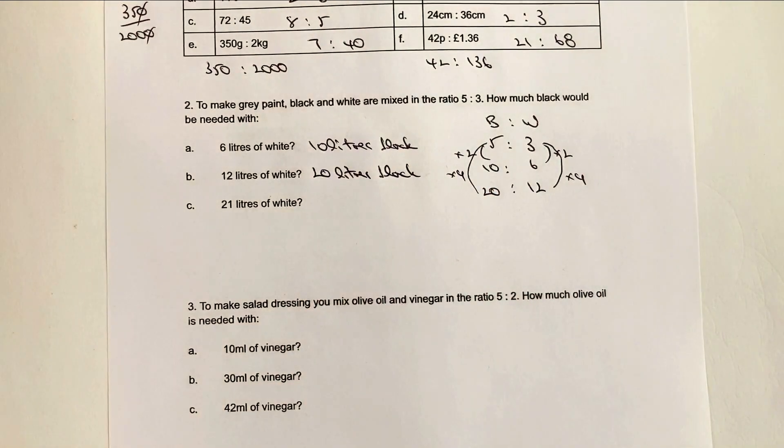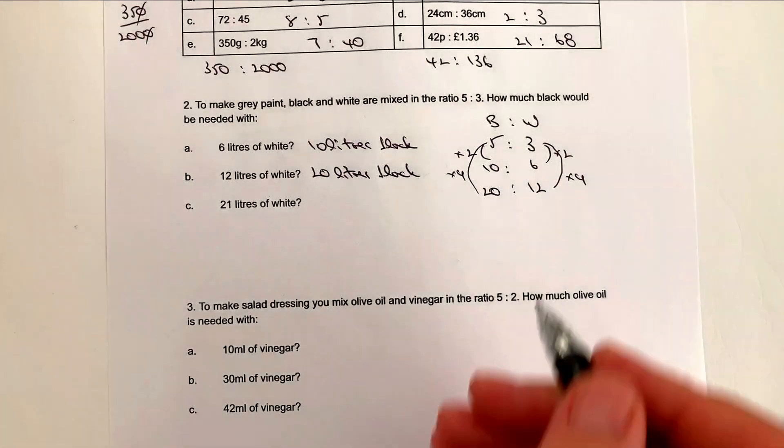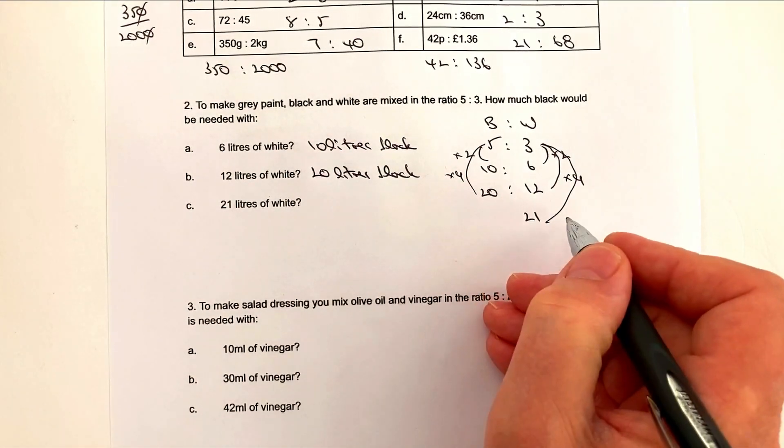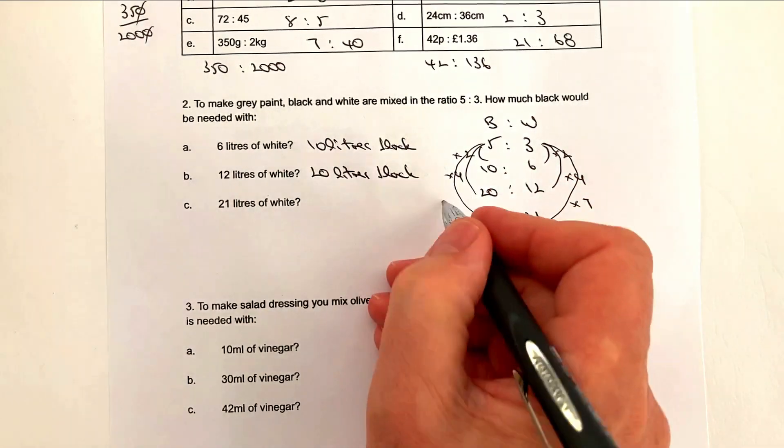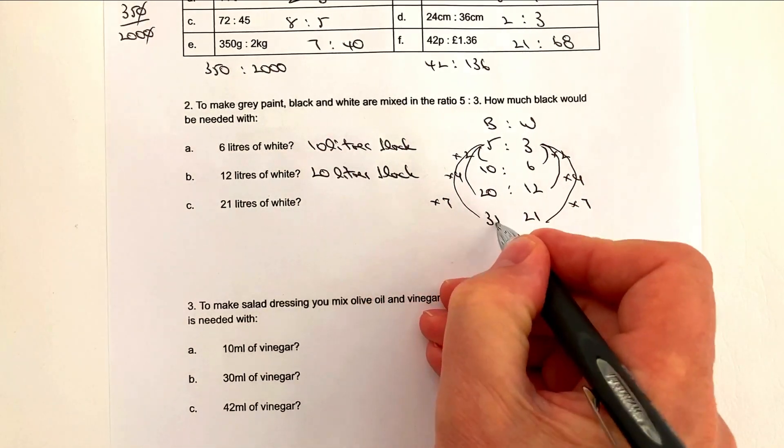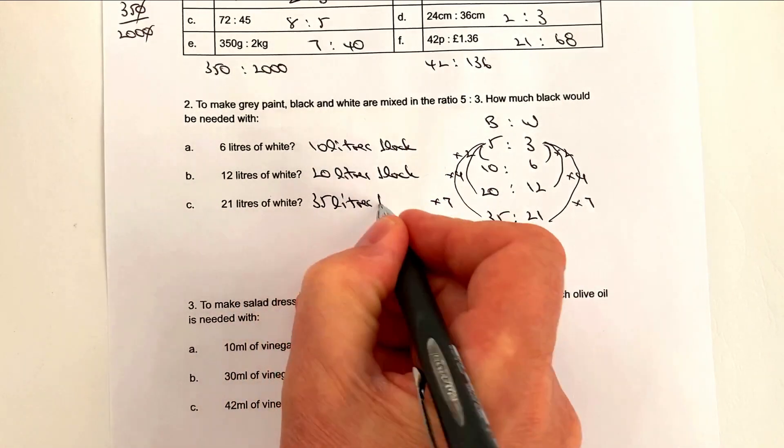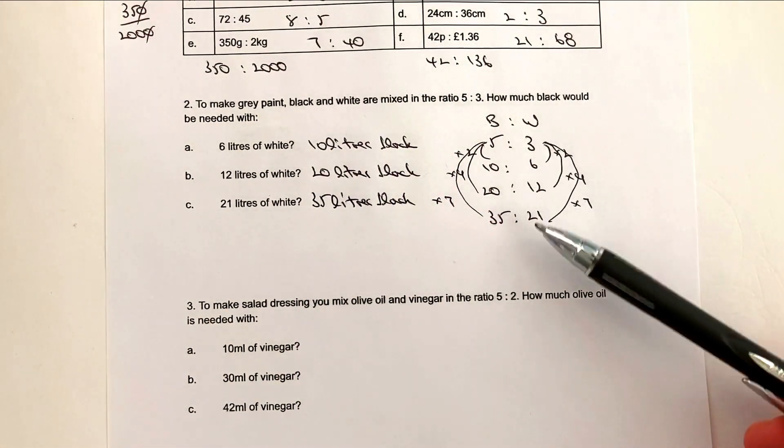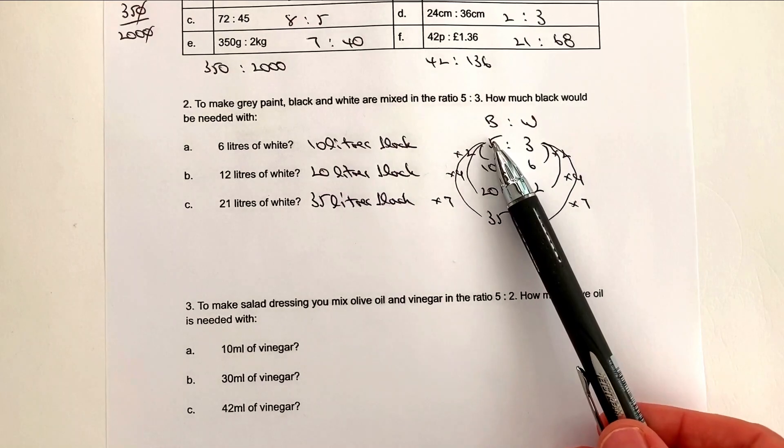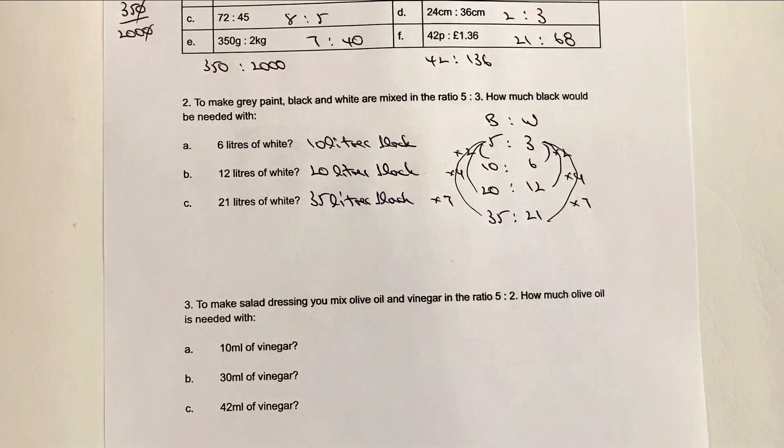And I'm going to use the same technique for the other two questions. So with white being 12 litres, what I've done is I've multiplied that 3 by 4, so I'm going to multiply the 5 by 4, and that's going to give me 20. So that would be 20 litres of black. Last one then is 21 litres of white. Well, again, if I make that 21, what I've done is I've multiplied the 3 by 7, so I'm going to multiply the 5 by 7, and that's going to give me 35, so it would be 35 litres of black paint. And this whole technique of working down the page, starting from your base numbers and then looking at the multiples, will help you with pretty much most of the ratio questions.